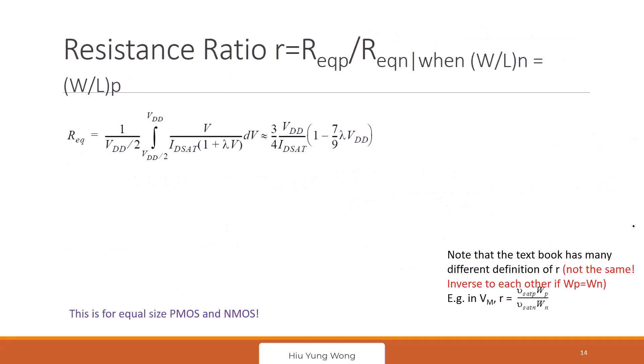Okay, let's move forward. So now, before we go to do the sizing, we need to introduce another concept. This is R, the equivalent PMOS resistance divided by the equivalent NMOS resistance when they have the same size.